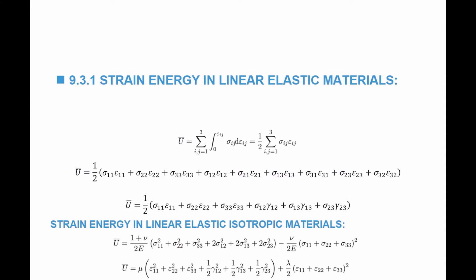For linear elastic isotropic materials, if we replace the stresses with the strains or the strains with the stresses in this equation, we get one of two equations: either the strain energy as a function of only the stresses, or the strain energy as a function of the strains.